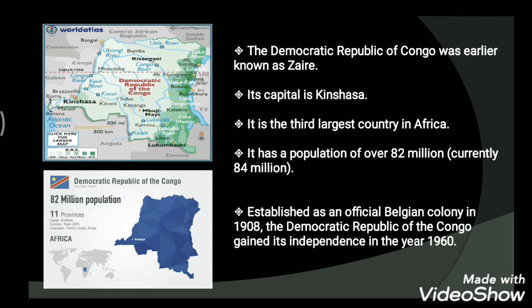It has a population of over 82 million, currently around 84 million. This country was established as an official Belgian colony in the year 1908, and the Democratic Republic of the Congo gained its independence in the year 1960.